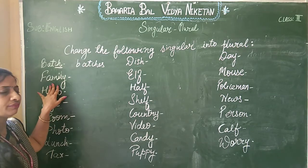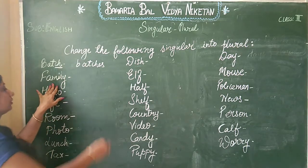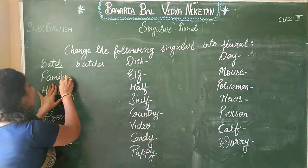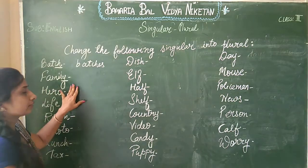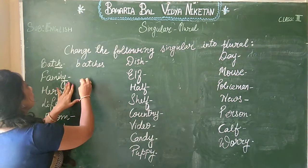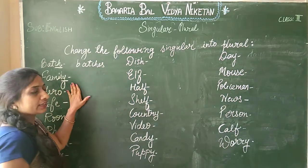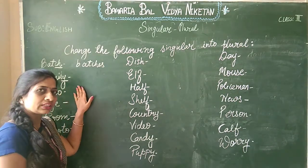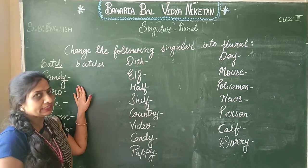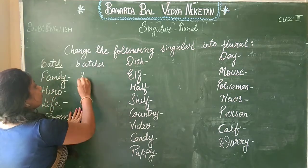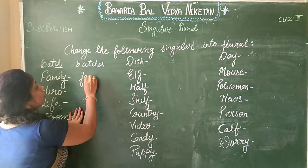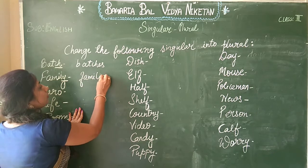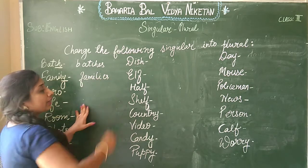Then 'family'. In 'family', what is at the end? Y. So where Y comes, we replace Y with IES. So it will be changed into 'families'.